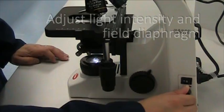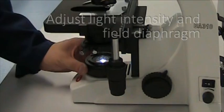Adjust the light intensity using the dial underneath the power switch. Then, rotate the ring around the light source to fully open the field diaphragm.